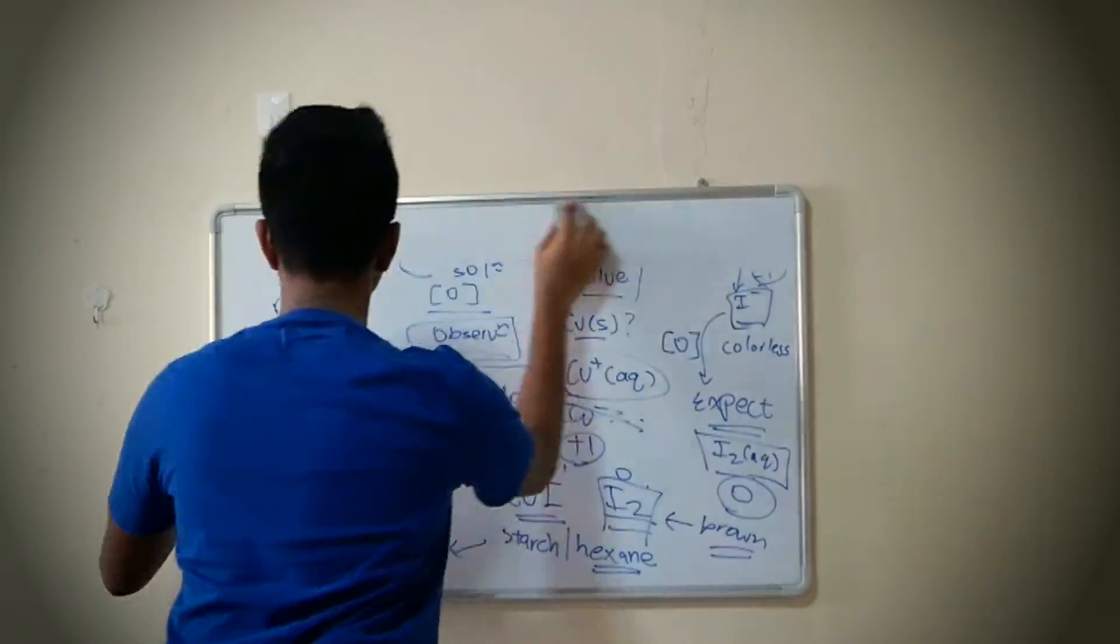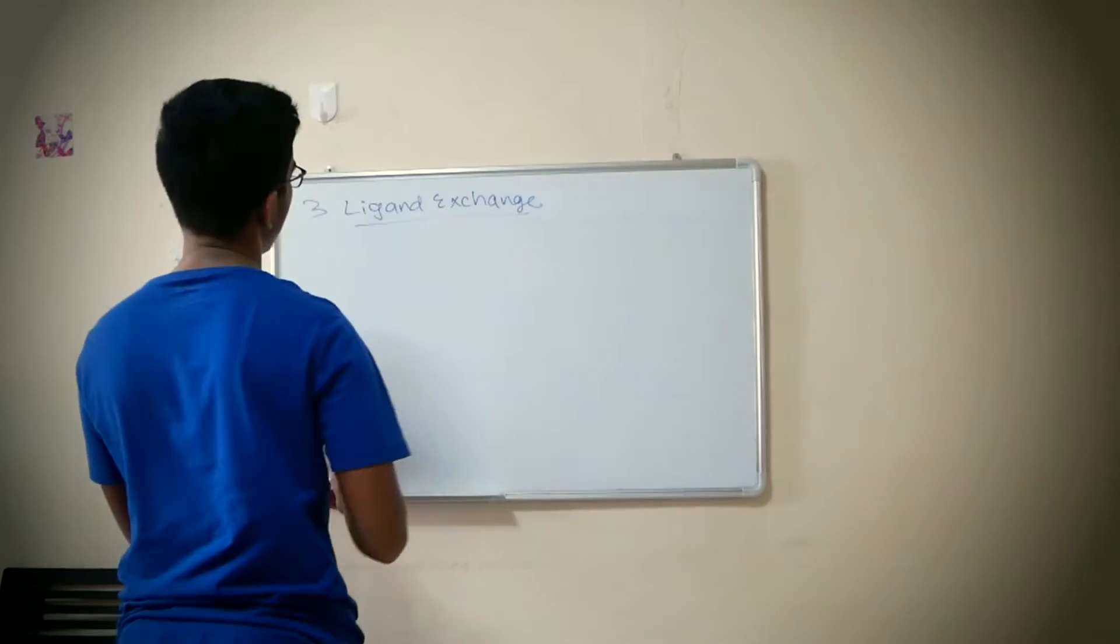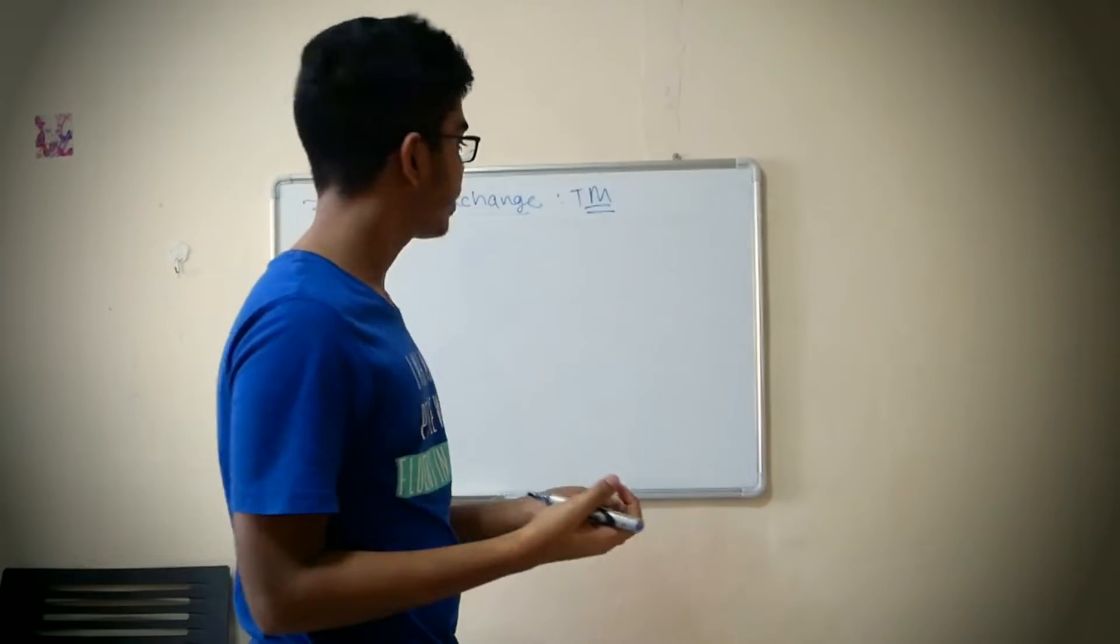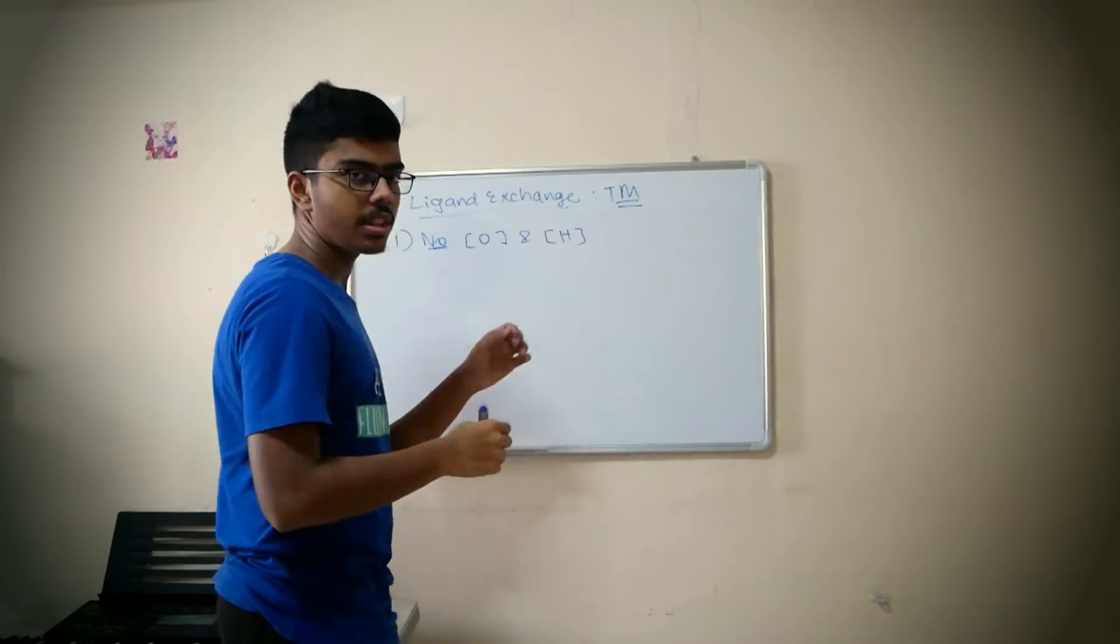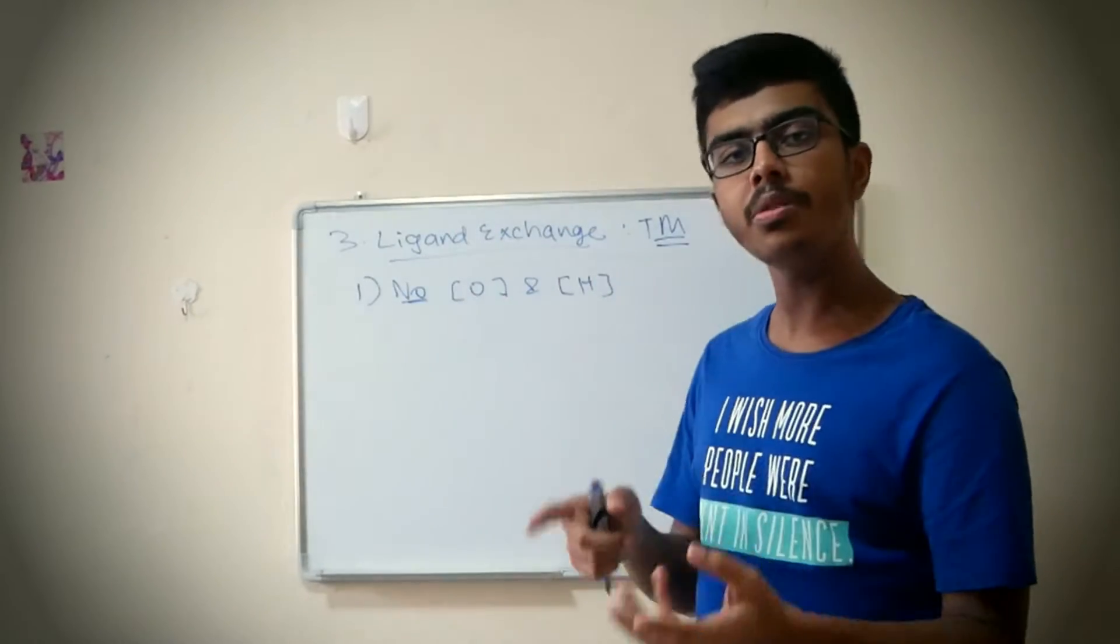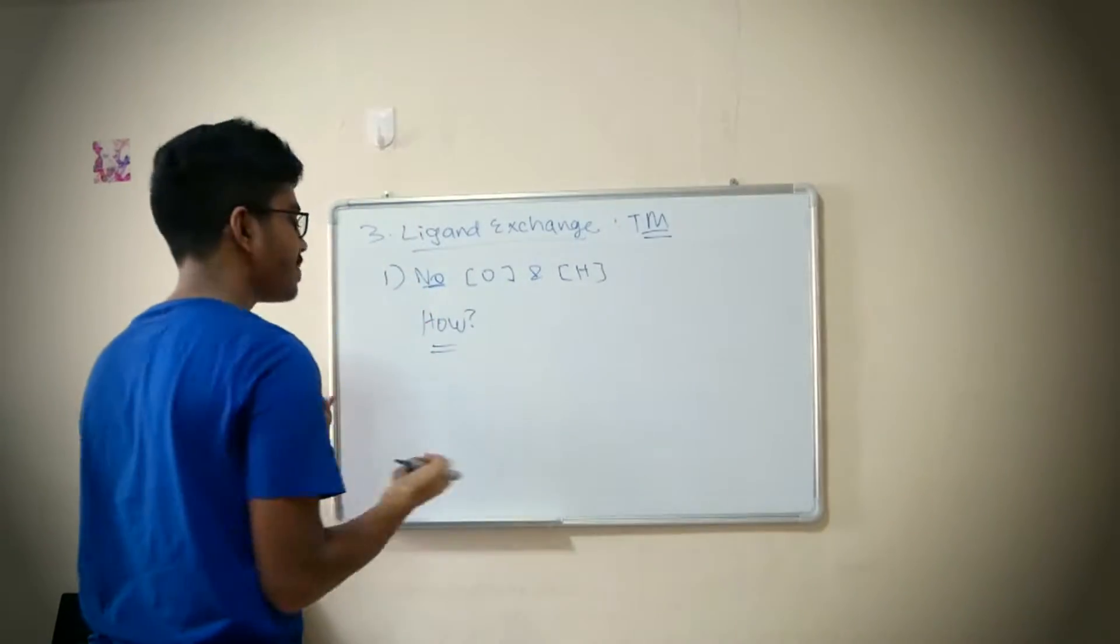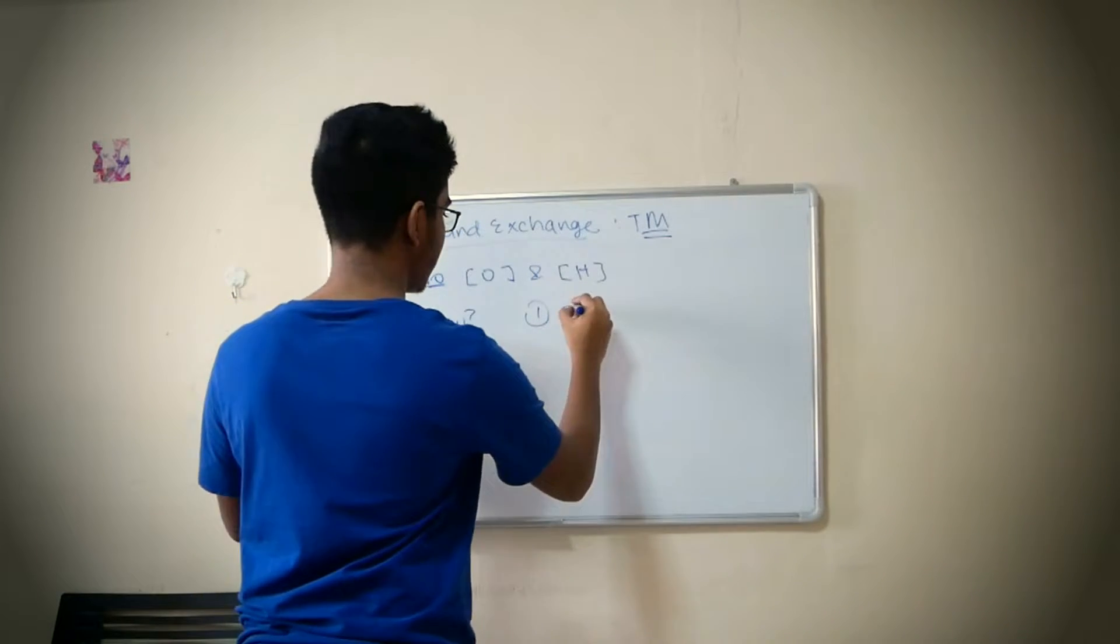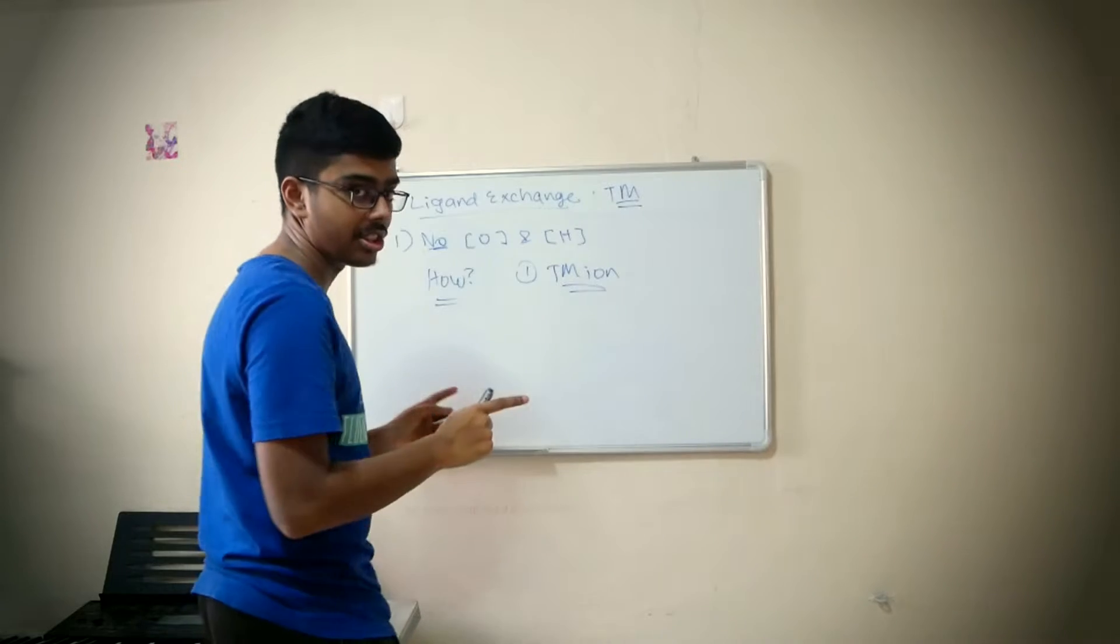Now we look at the third reaction type. The third reaction type I'm going to highlight to you is ligand exchange. And where do you see this ligand exchange? In theory, in your notes, you study this under the topic of transition metals. The first thing you need to know is there is no oxidation and no reduction because this is not a redox reaction.